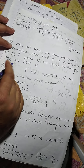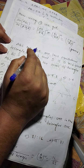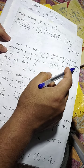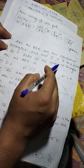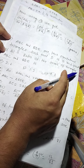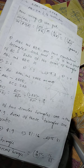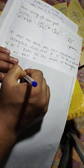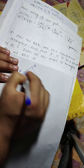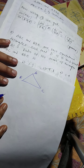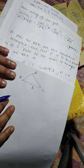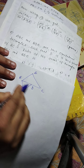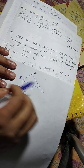Now, question number 8: triangles ABC and BDE are two equilateral triangles such that D is the midpoint of BC. Find the ratio of the areas of triangles ABC and BDE. Here, triangle ABC is drawn with D as the midpoint of BC, and E is the corresponding vertex forming triangle BDE.